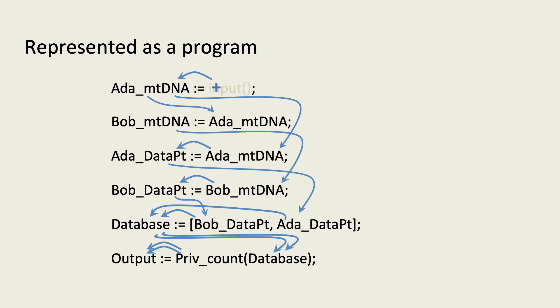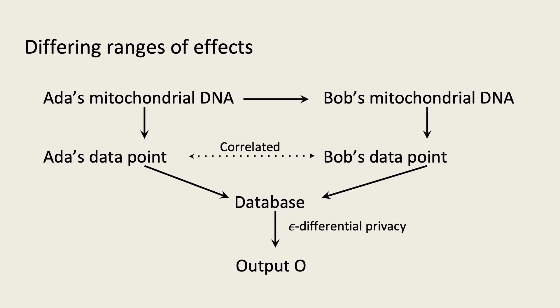This difference explains why it's important to distinguish between the underlying condition and the data point recording that condition. We can represent this in our diagram as well. The causal effect of Ada's DNA, shown in gray, reaches every random variable in the diagram. The causal range of her data point, shown in blue, does not reach Bob's data point, despite them being correlated by having a common cause. Furthermore, Bob's data point does not affect Ada's.